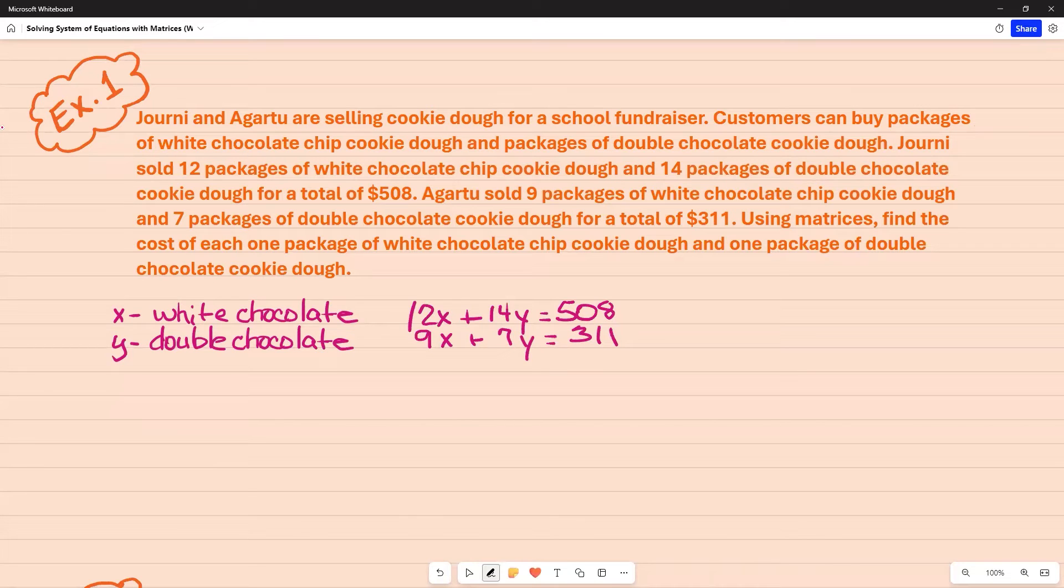So now I'm going to use matrices, which in this case is going to be a two by two. I'm going to use my coefficients 12, 14, 9, and 7, and then I'm going to multiply that times the variable matrices, which is X and Y, and I'm going to finally set it equal to 508 and 311, which represents my constant matrix. I'm going to label these. This is going to be matrix A, matrix X, and matrix B.